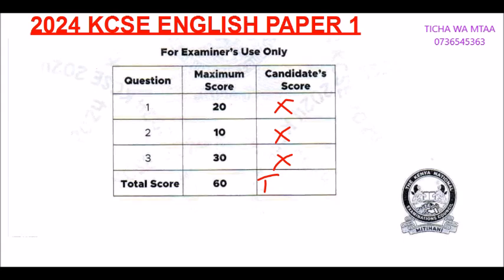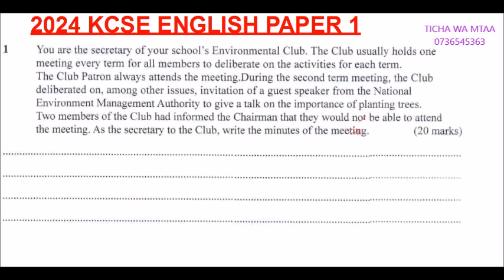Question number one says: as a member of your school's environmental club, the club usually holds one meeting every term to deliberate on activities. During the second term meeting, the club deliberated on, among other things, inviting the environmental management authority to speak on the importance of planting trees. One member informed the chairman they would not be able to attend the meeting. As secretary, write the minutes of the meeting — this carries 20 marks.